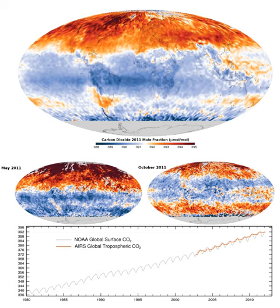The fast carbon cycle refers to movements of carbon between the atmosphere, oceans, soil, rocks, and volcanism. Both carbon cycles are intrinsically interconnected and atmospheric gaseous carbon dioxide facilitates the carbon cycle.